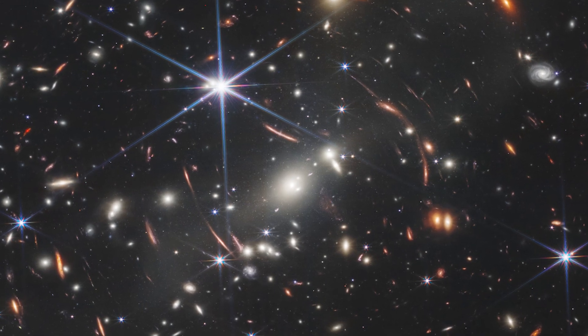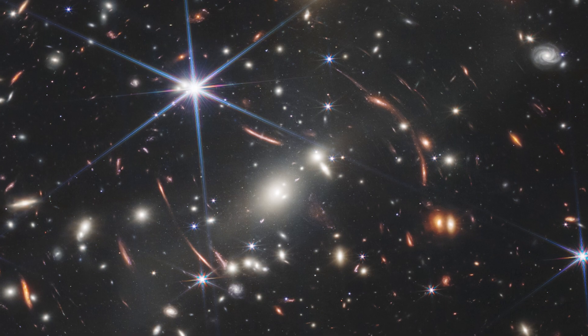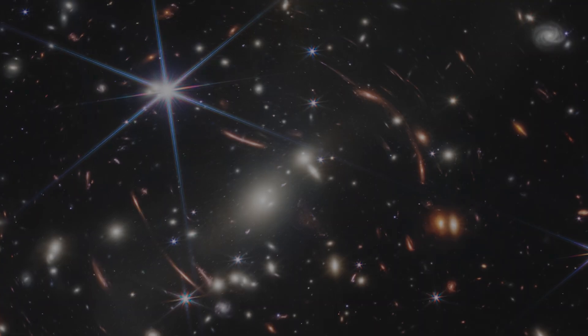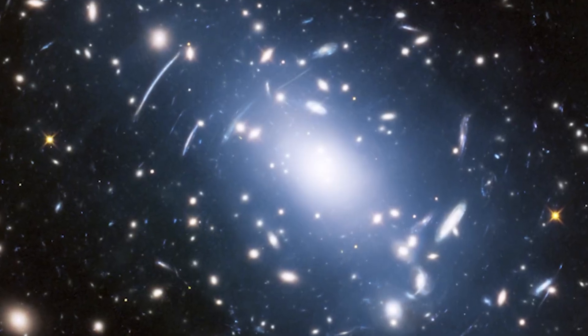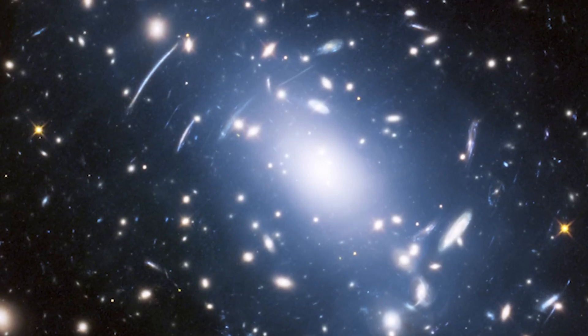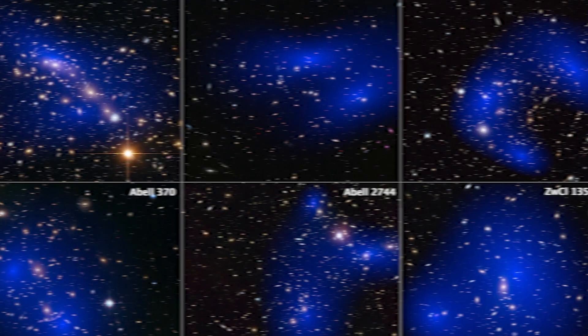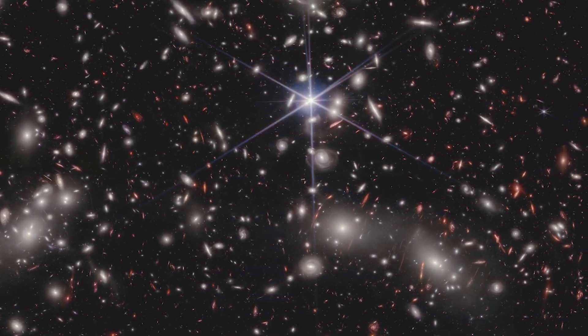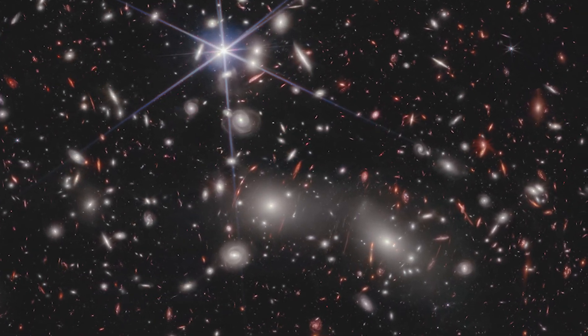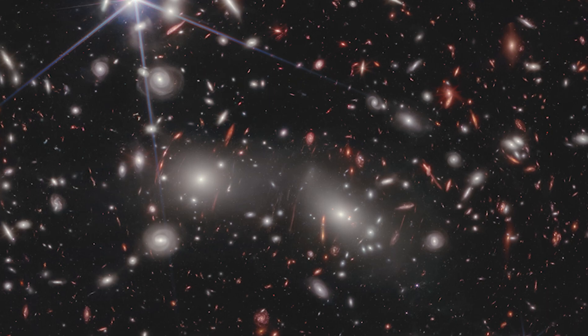Gravitational lensing also helps scientists study the structure of the universe on a large scale. By looking at the distribution of dark matter using gravitational lensing, scientists can map out the large-scale structure of the universe and how it has evolved over time. This can help us understand the origins and evolution of the universe.